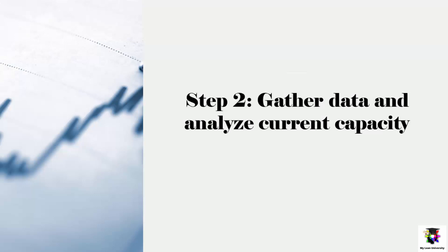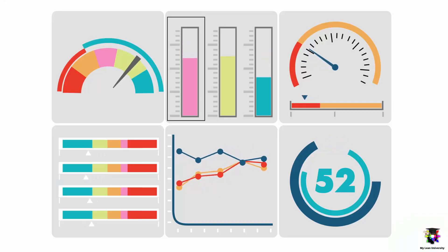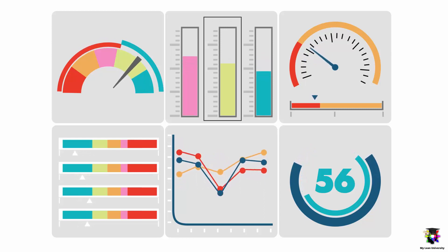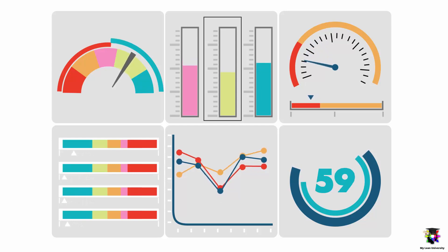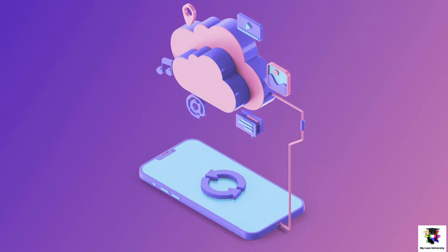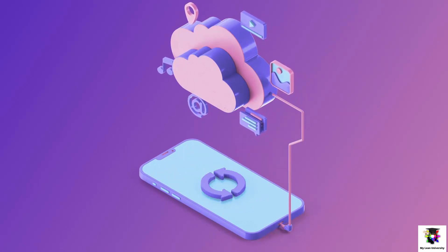Step two: gather data and analyze the current capacity. The next step in the capacity planning process is to gather data and analyze the current capacity of the business. This can include information on production output, inventory levels, and the capacity of equipment and other resources. For example, a manufacturing company may gather data on the number of units produced per shift, the average time it takes to complete a unit, and the capacity of the team providing the service.